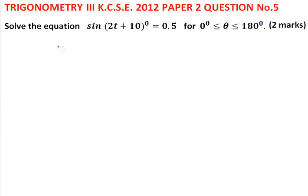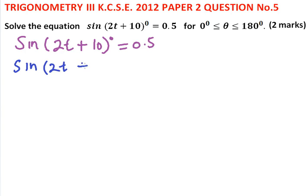So we write our equation: sin(2t + 10)° = 0.5. We look for the angle whose sin is 0.5, and that angle is 30.